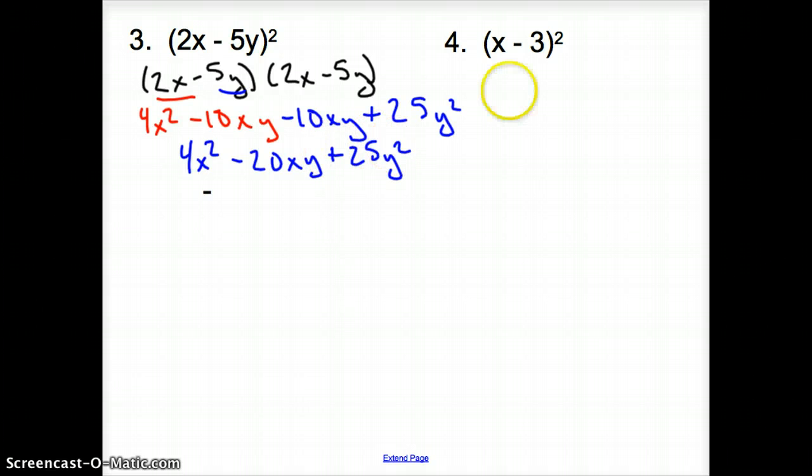Moving on to number 4. Let's try it again. x minus 3 times x minus 3. If you want to erase me, go for it. Again, I'm going to start with this x. So it's x squared minus 3x. Then moving on to the 3, it's going to be minus 3x again plus 9. We simplify to get x squared minus 6x plus 9.